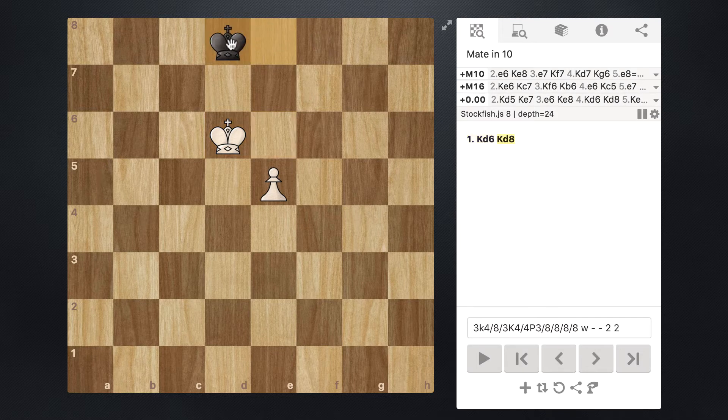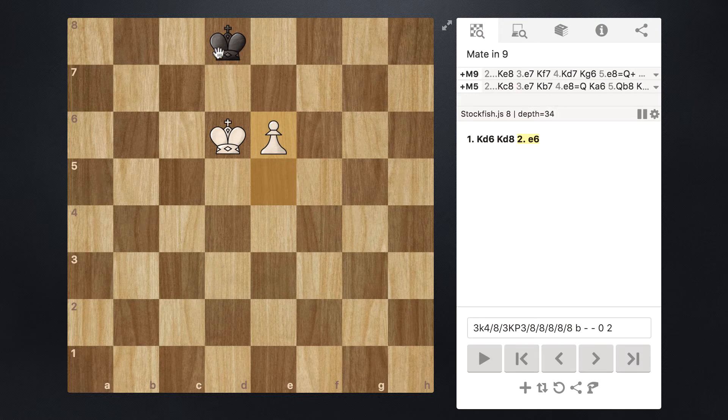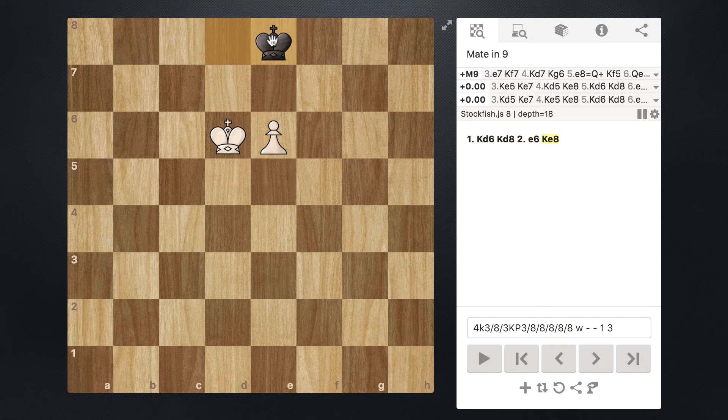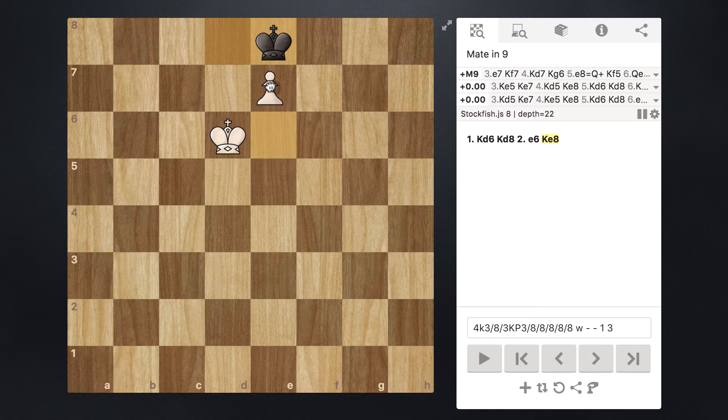So now what we want to do is we actually just want to go ahead and take our pawn and move it up one from e5 to e6. Now of course the king doesn't want to go away in this direction. It's trying to defend this pawn from promoting. So it's going to go ahead and move back from d8 to e8. So it looks like the king is doing its job, but look what happens whenever we push our pawn from e6 to e7.